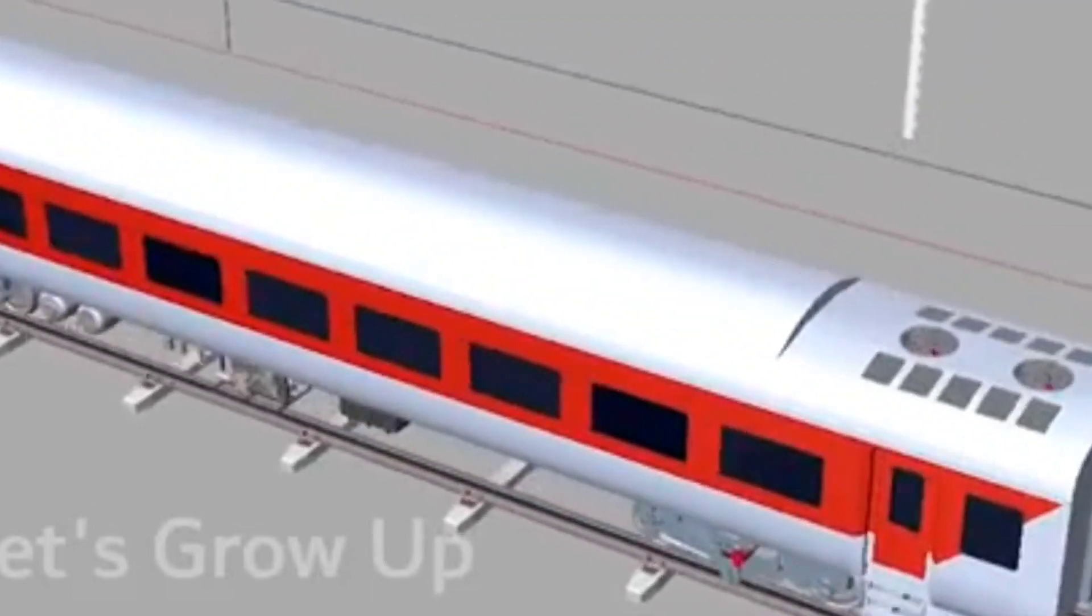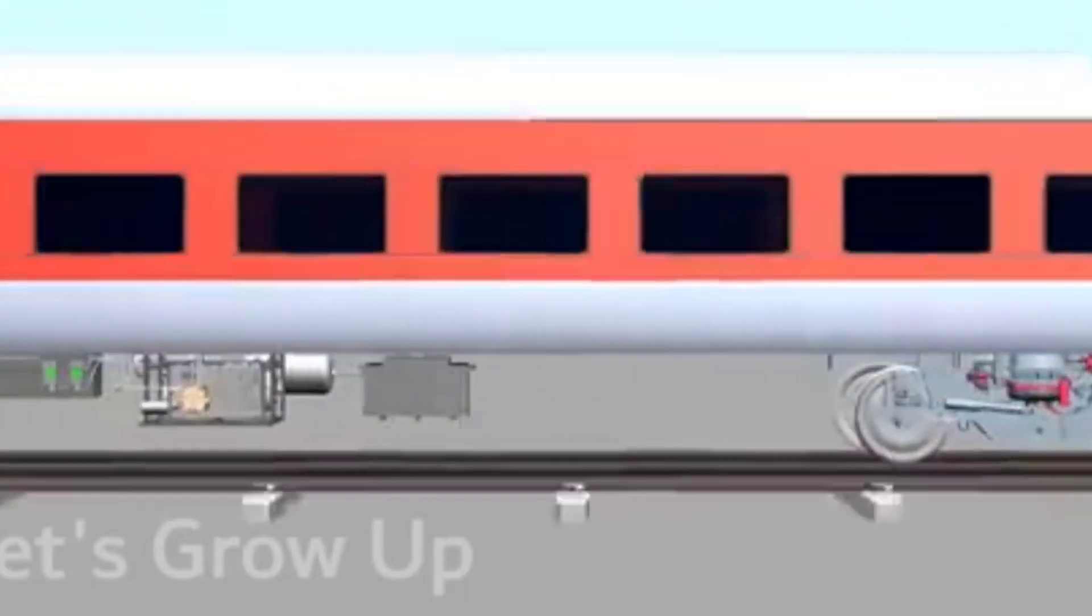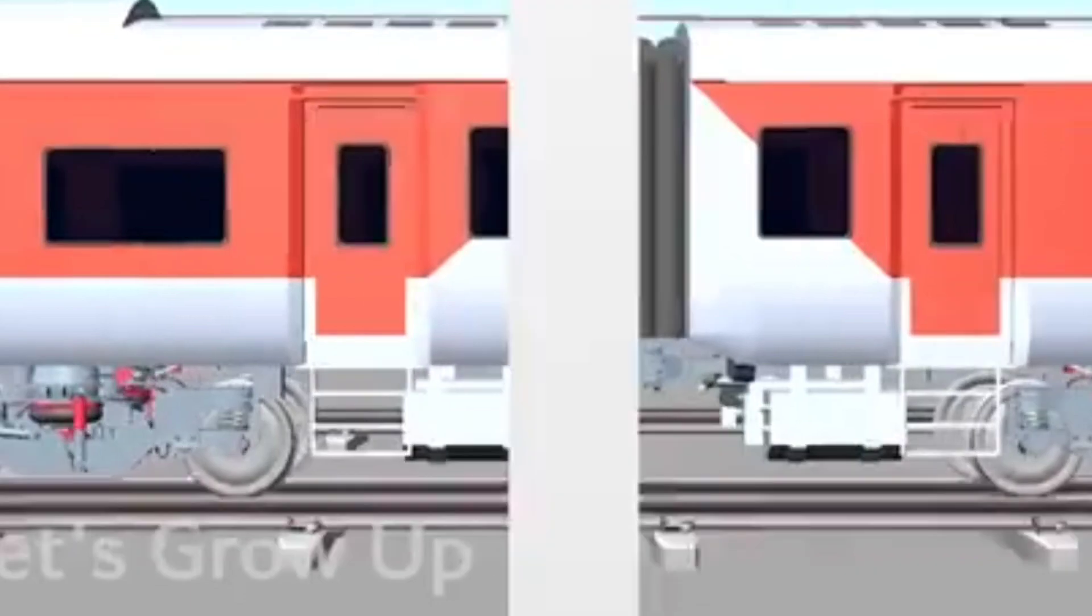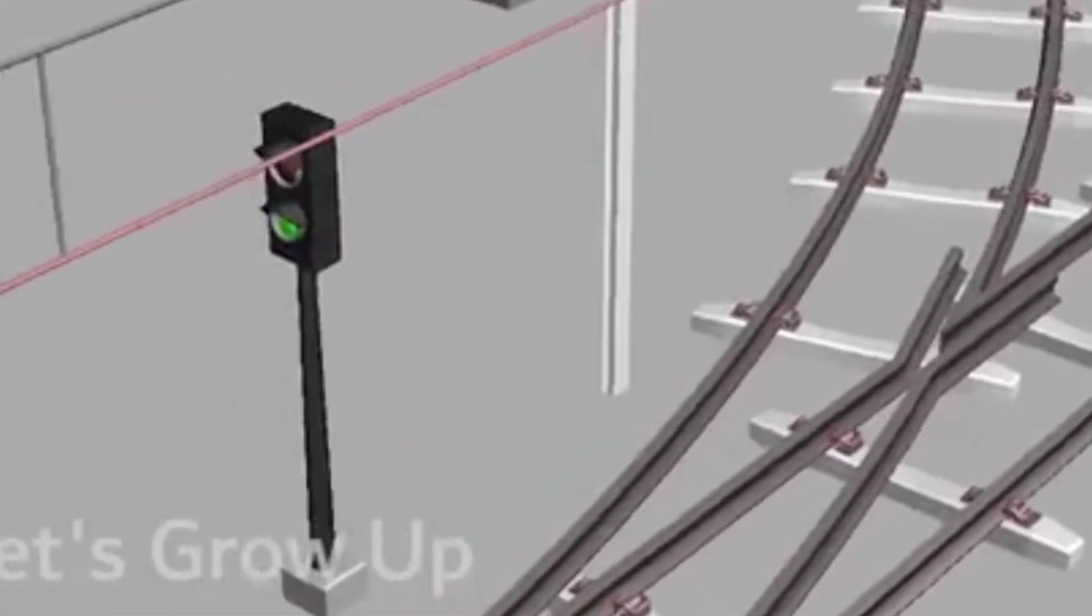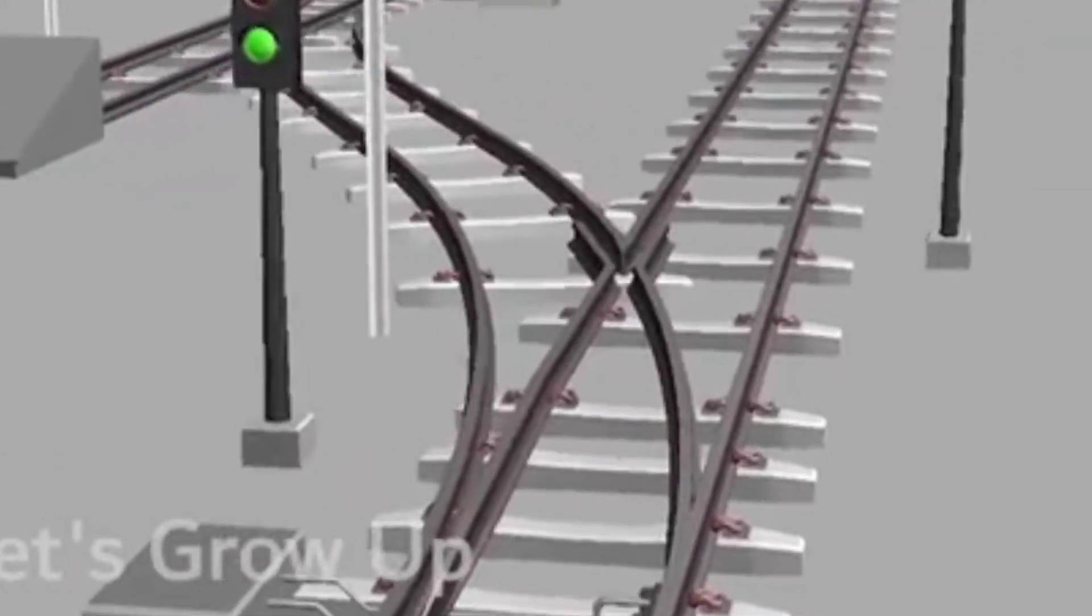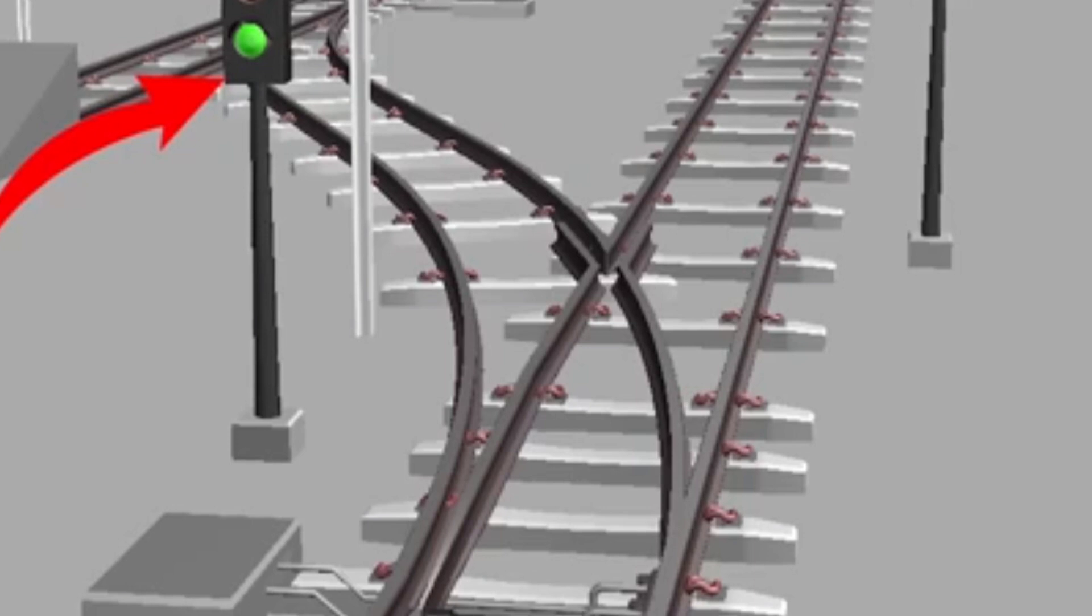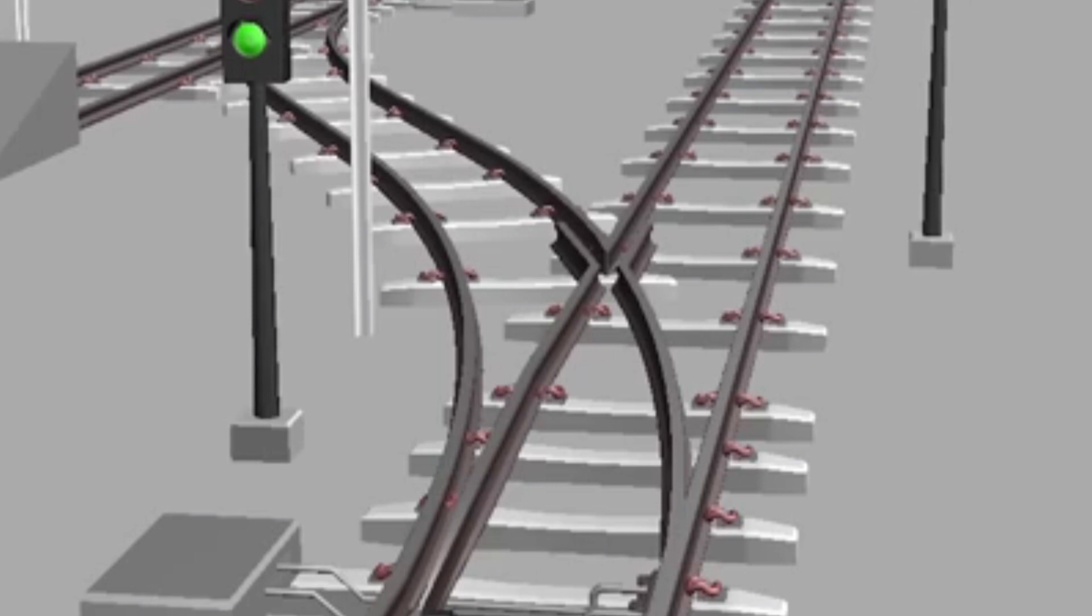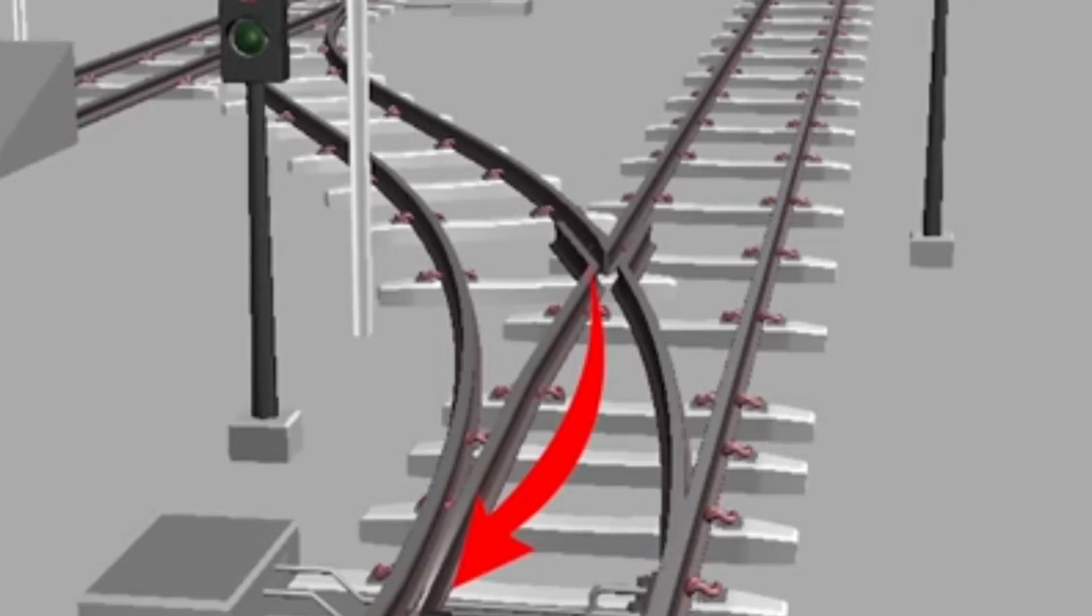This is Coromandel Express. The speed of this train was 120 or near about 127 km per hour. Here the loop line signal is activated with the point machine, and the main line signal is red right now. The signal of the main line is activated, but the track did not change. Still the track is connected with the loop line.